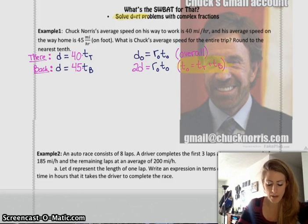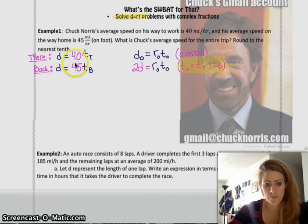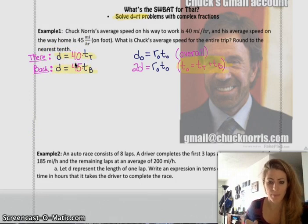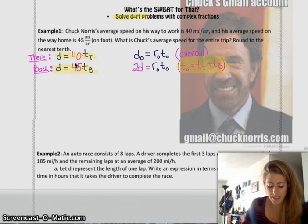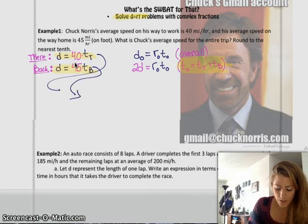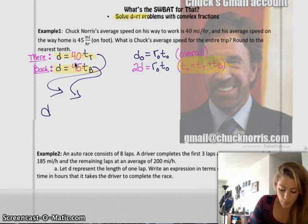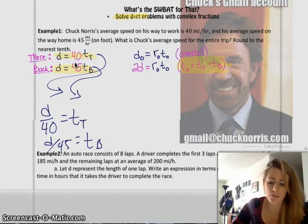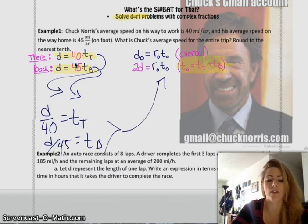And now I just need to solve the other equations to find out what the time there equals in terms of D, and where the time back in terms of D is. So, if I go back to my original two equations, these two, I can just divide both sides by 40 and by 45 in each equation, and then get my T there and back. So, I'm gonna end up with my D over 40 equals T sub there, and my D over 45 is gonna be my time back.